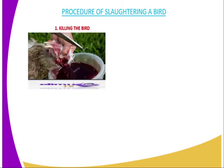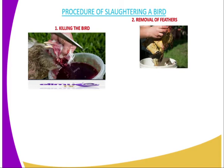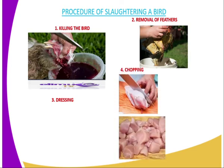Procedure for slaughtering a bird: the first step, you are supposed to kill the bird using either of the methods already stated. Then number two, you remove the feathers. When you are removing the feathers, you are supposed to put the bird in hot water and immediately remove the feathers very fast while the body is warm, because if the body gets cold it becomes a very difficult task.